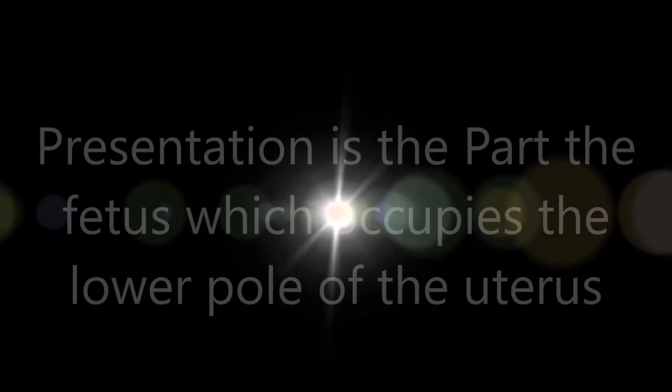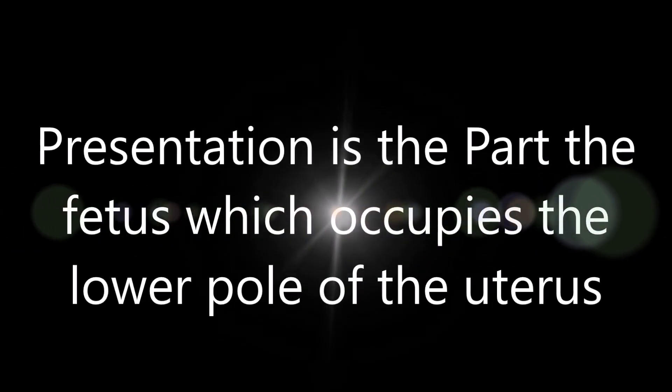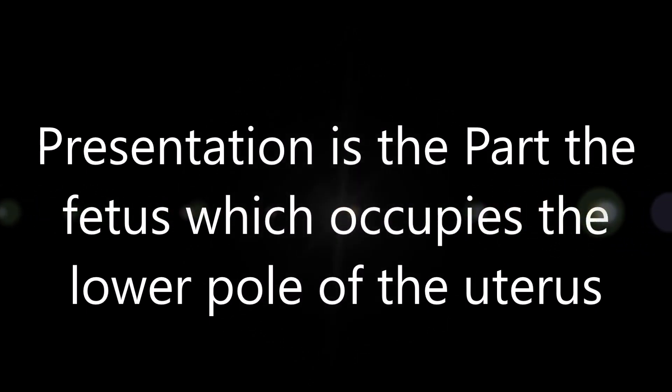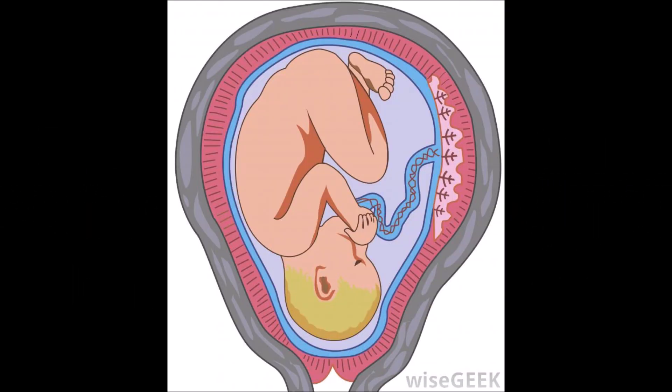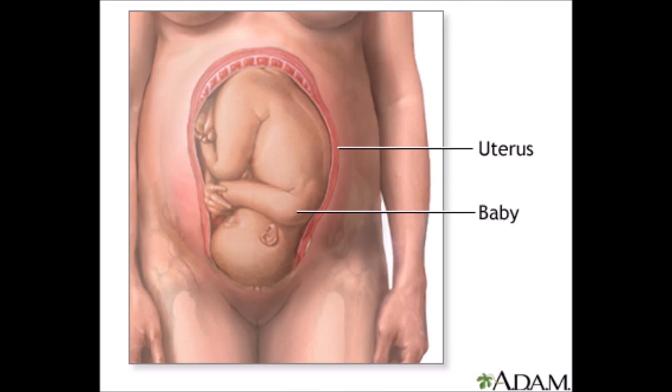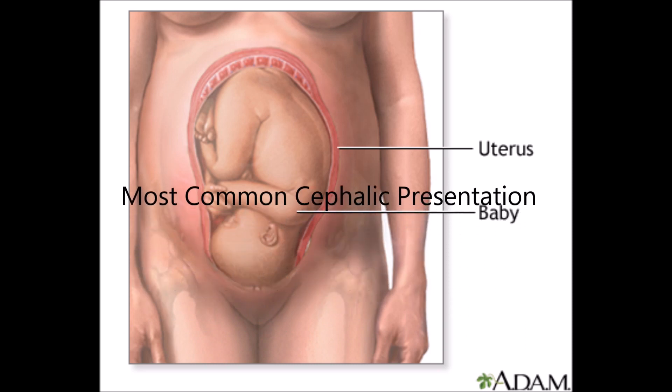Presentation: the fetus has two parts of its body. The lower pole inside the uterine cavity — here is the fetus's head part, which is at the lower pole. This part is cephalic, so the most common presentation is cephalic presentation.